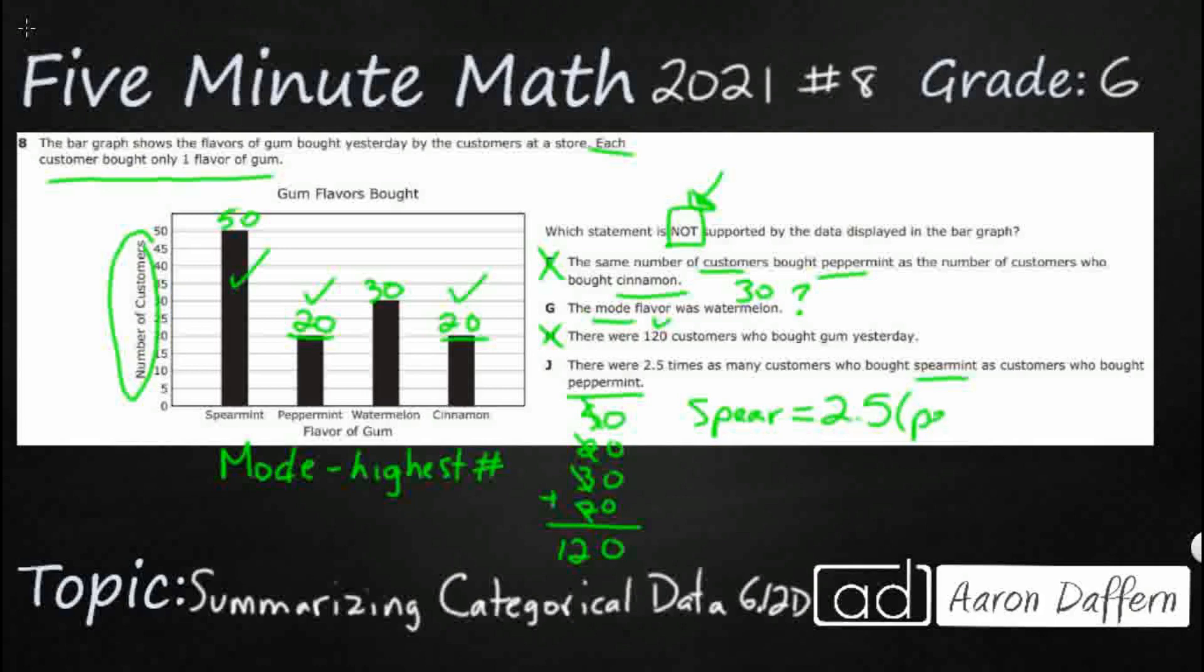Alright. I'm just going to put pepper. So if I take my peppermint, multiply it by 2.5, I should get my spearmint. So my spearmint is 50. And that should be 2.5 times my peppermint, which is 20. At least that's what this J is saying.